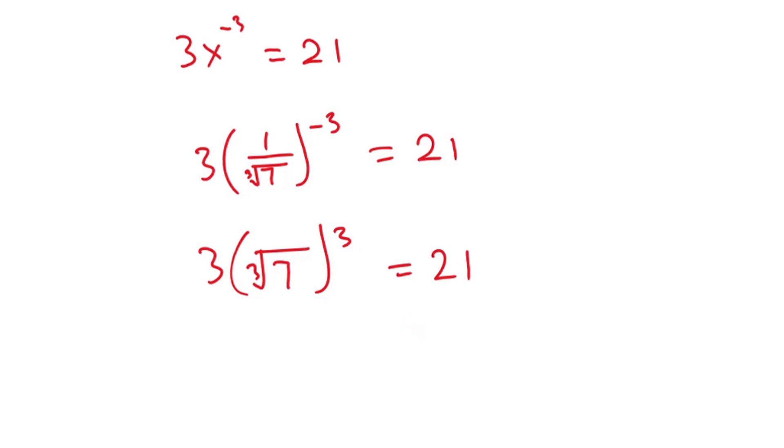So straight away you can see that this cube will cancel this cube root. Now we have 3 into 7 and this should be 21. And of course, 3 times 7 is nothing but 21.